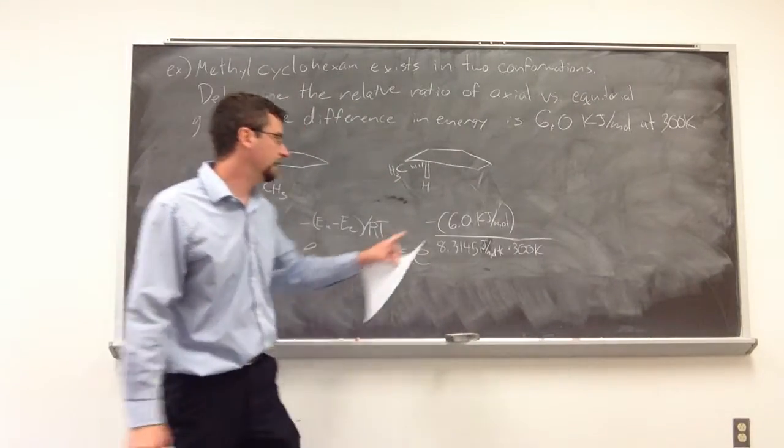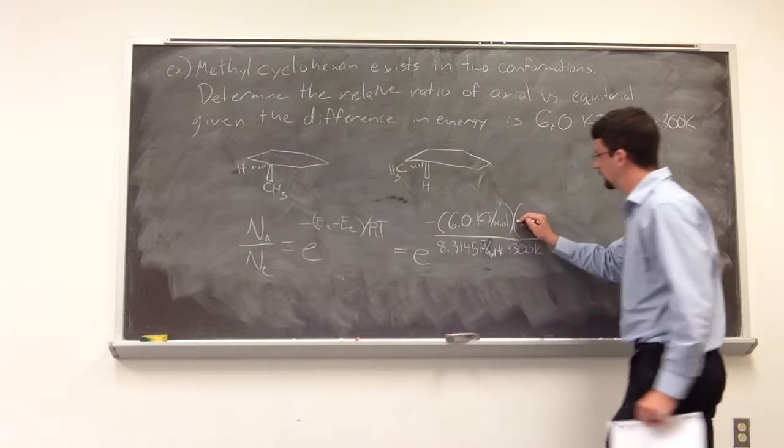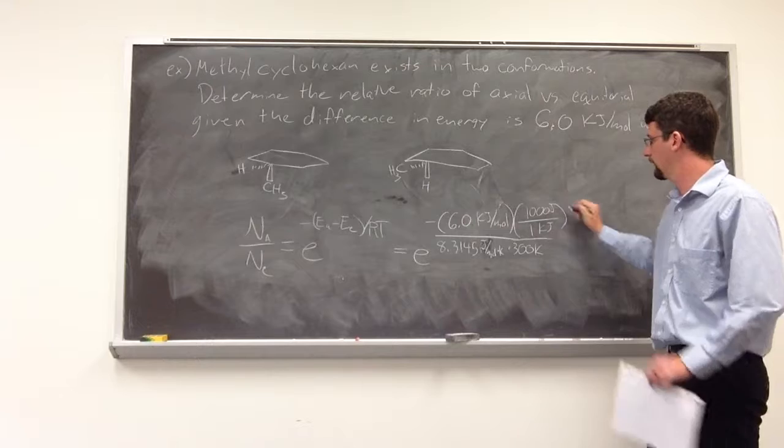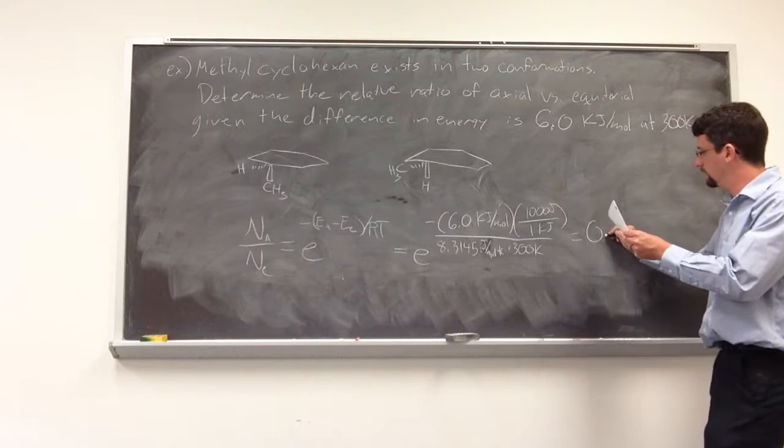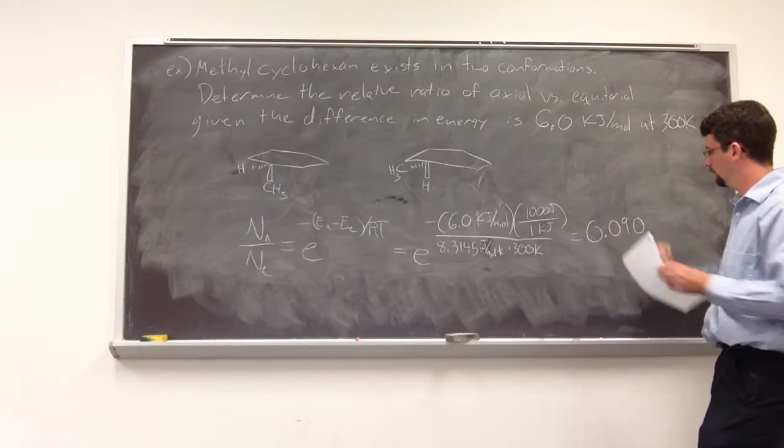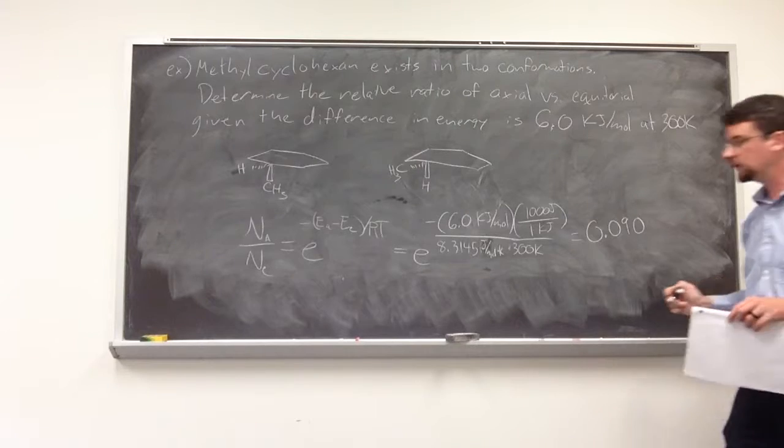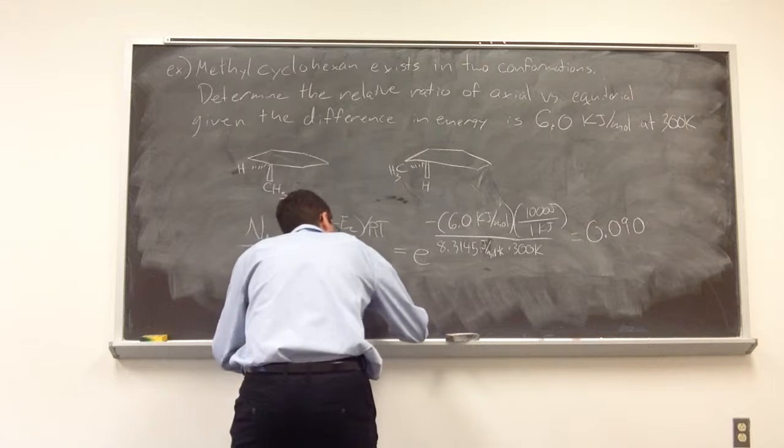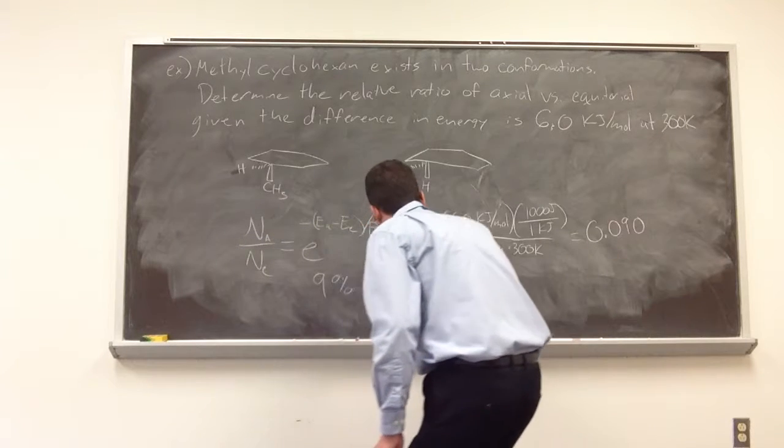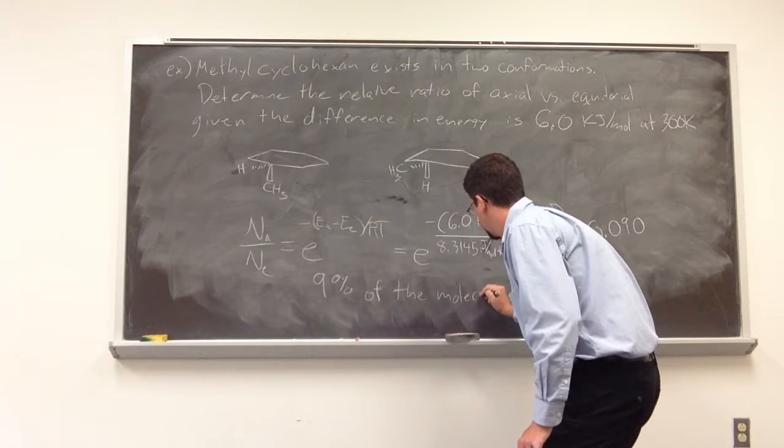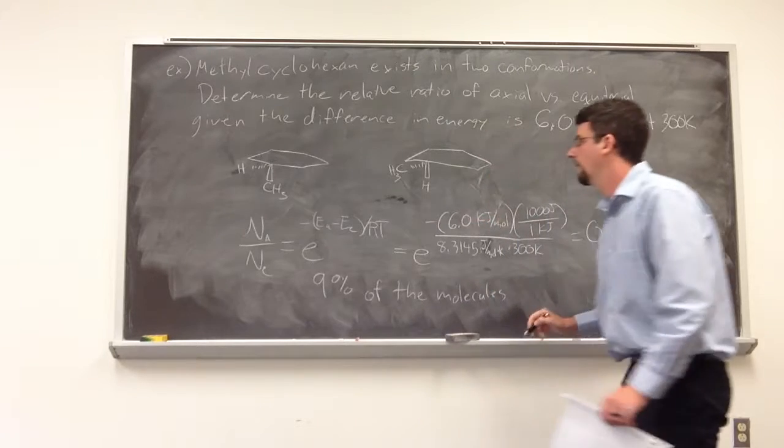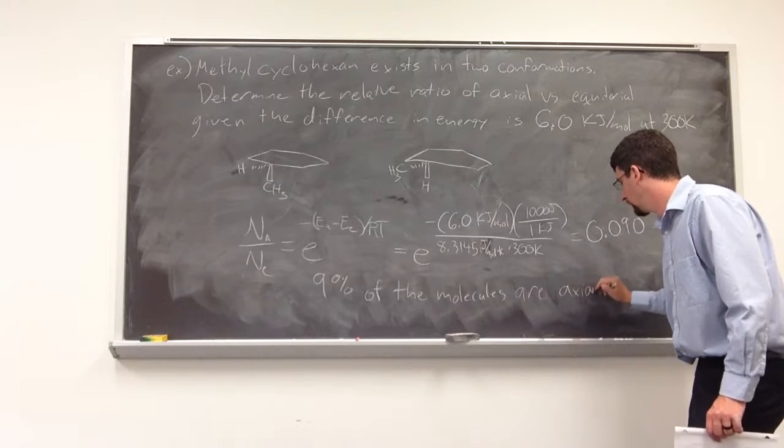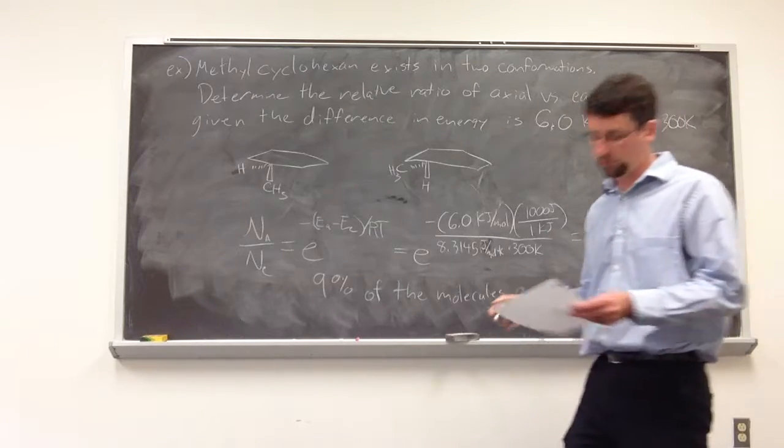So when we look at that, we've got to change that kilojoules per mole to joules per mole. So for every 1 kilojoule, we have 1,000 joules. Manipulate this through, we get 0.090. What this means is 9% of the molecules are in the axial position while the remainder are in equatorial.